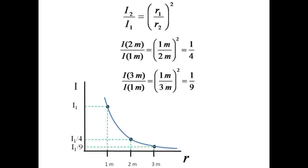Thus, if we double the distance from the source, we can expect the intensity to decrease by a factor of 1 fourth. Tripling the distance leads to a decrease in the intensity by a factor of 1 ninth.